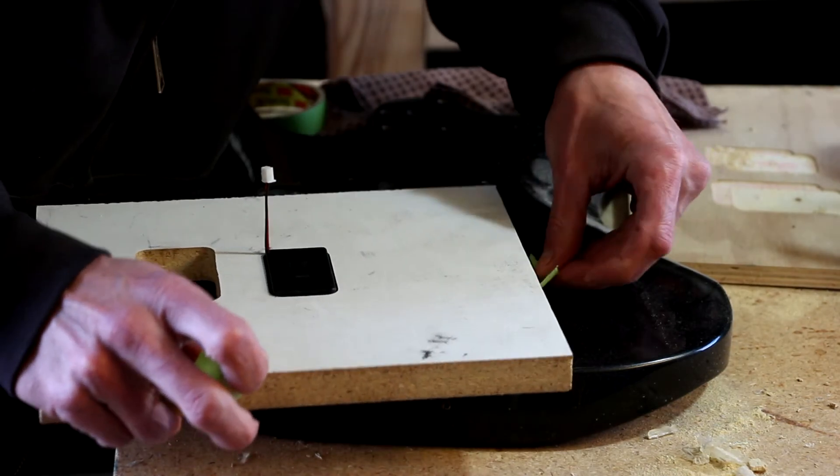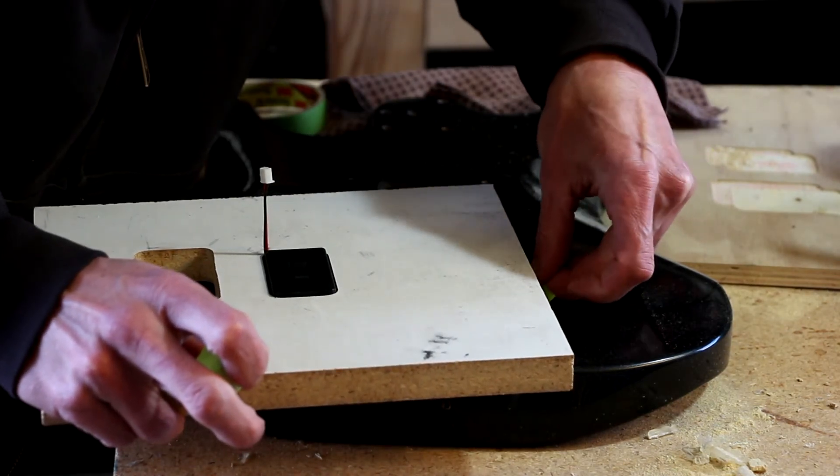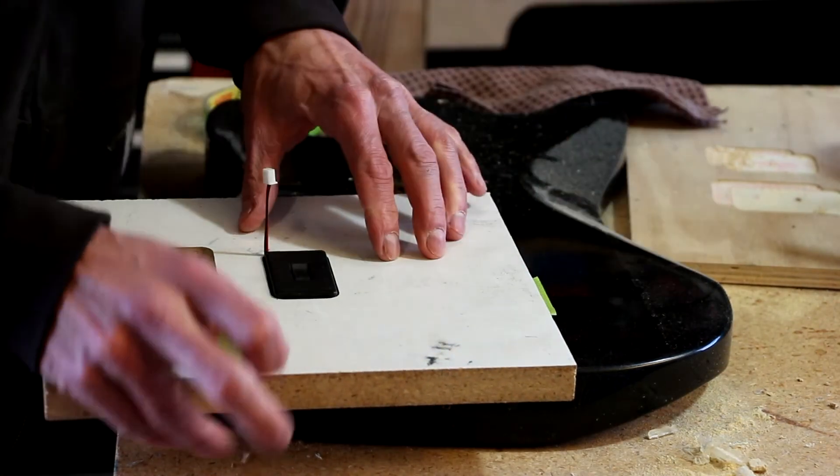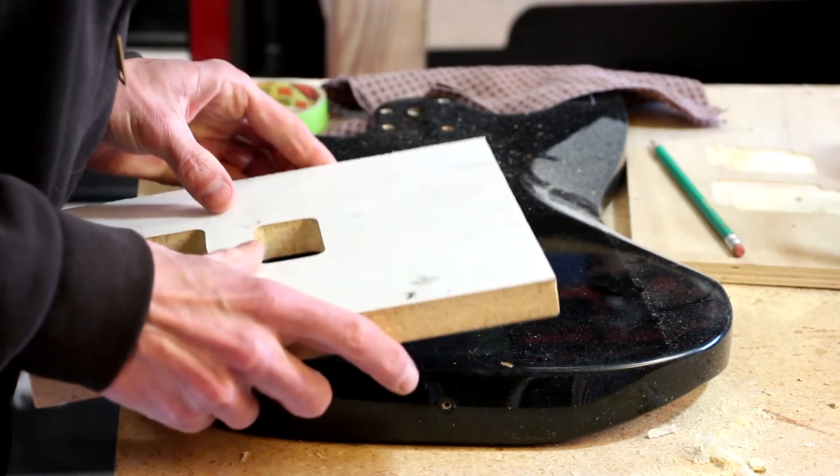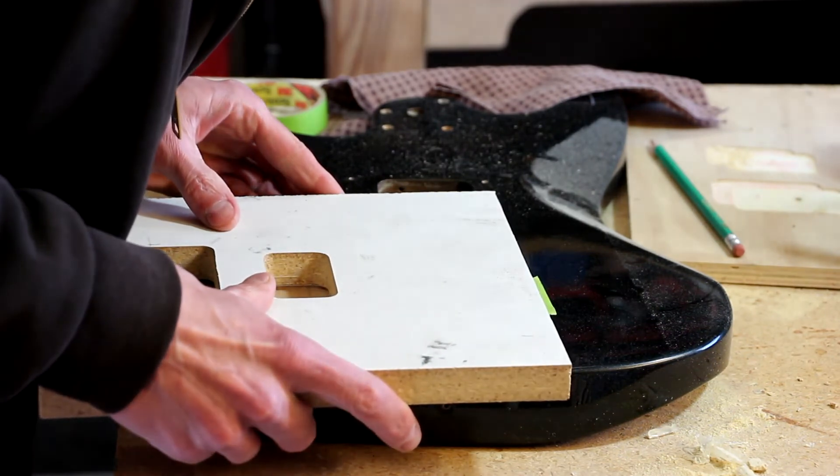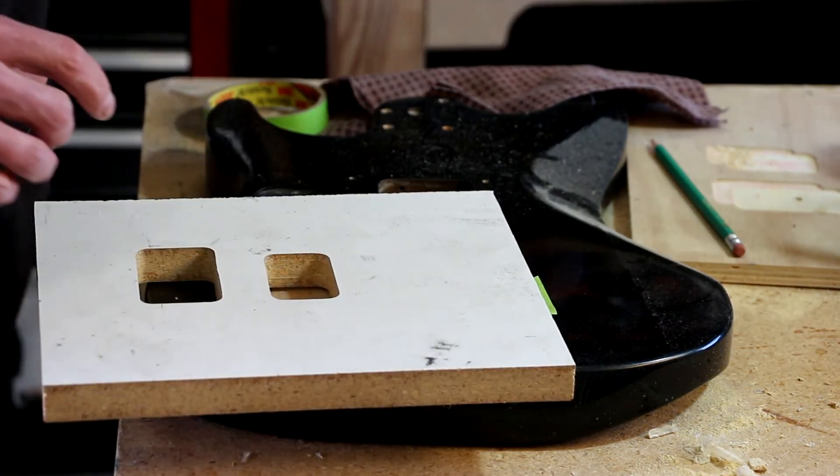Then I'll stick a couple of pieces of tape on the body where I can mark pencil lines. Now I'll pull the battery box back out, line up my pencil lines and clamp it in place.